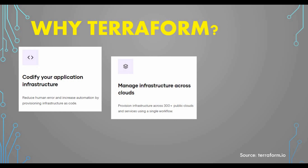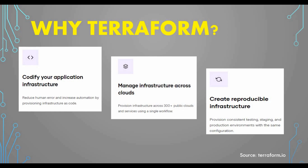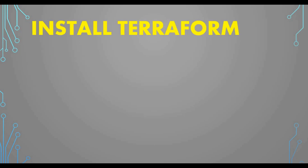Terraform supports around 300 or more public clouds and services using a single workflow, so you can provision infrastructure across any kind of cloud provider. There are providers listed in Terraform which I'll discuss later in this tutorial. Another benefit is reproducible infrastructure — once you create your config file, you provision consistently across testing, staging, and production with the same configuration file, without having to redo everything each time.